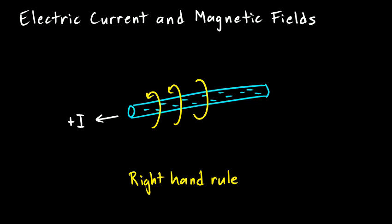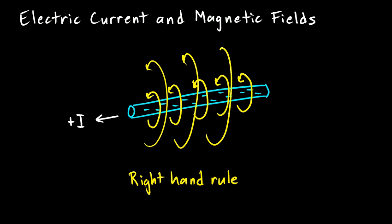I'll draw the magnetic field like this — the field lines are circular lines around the wire, and we know which way the field is pointing by the right-hand rule. You could draw more field lines further out and they would spread out more further away, but it's hard to draw more and keep your diagram reasonably neat. That's a visual picture of the magnetic field around a current-carrying wire.